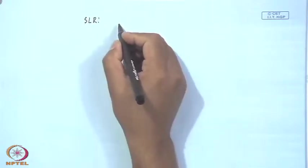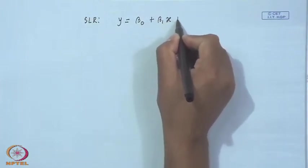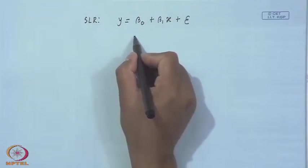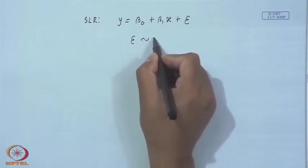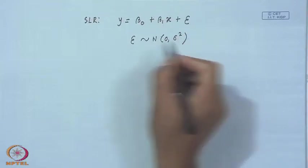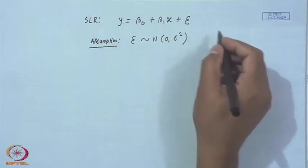As I mentioned, y is a random variable and x is a controlled variable which is not a random variable. Let me recall why I say y is a random variable. In the simple linear regression model, we consider the model y = β₀ + β₁x + ε, and we assume that ε is a random variable which follows a normal distribution with mean 0 and variance σ².